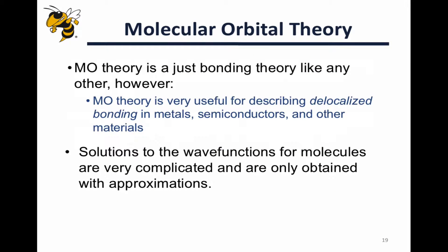So MO theory is really a bonding theory like any other, describing the nature of electrons in atoms. But as we just alluded to, the power of molecular orbital theory comes in when we need to describe delocalized electrons, or delocalized bonding. Electrons involved in delocalized bonding cannot be described by localized bonding models like valence bond theory, Lewis structures, and other simple models like those.